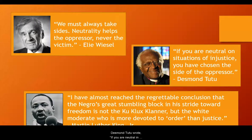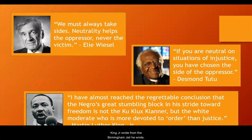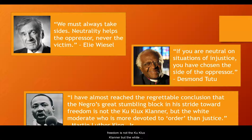Desmond Tutu wrote: "If you are neutral on situations of injustice, you have chosen the side of the oppressor." And in the letter Martin Luther King Jr. wrote from the Birmingham jail, he wrote: "I have almost reached the regrettable conclusion that the Negro's great stumbling block in his stride towards freedom is not the Ku Klux Klaner, but the white moderate who is more devoted to order than justice."